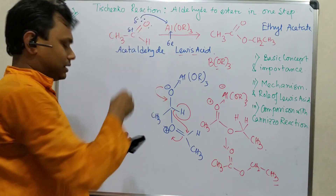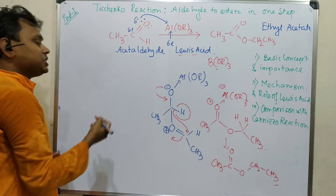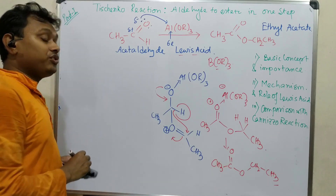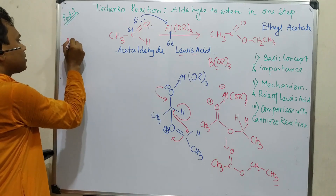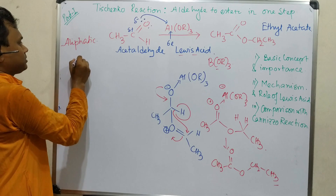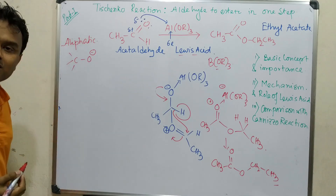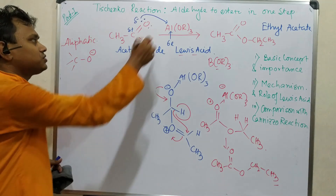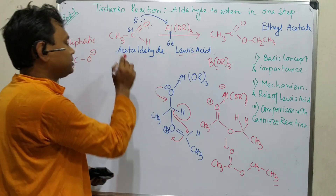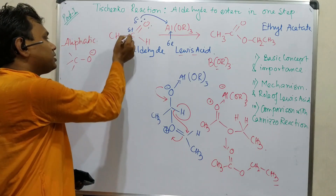Regarding the aluminum alkoxide Al(OR)₃ — what is R? Generally any aliphatic alkoxide can be used. The alkoxide carbon can be primary, secondary, or tertiary, but tertiary alkoxides are not preferred because bulkiness around the aluminum center hampers coordination. Steric bulk is an important factor, and I will give a specific example in the next video.